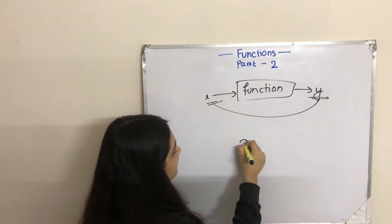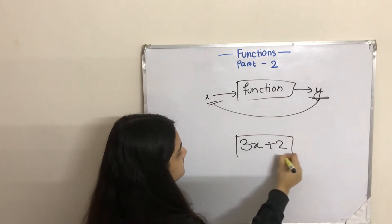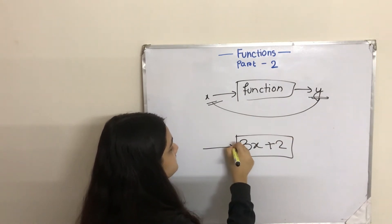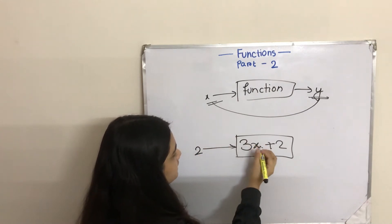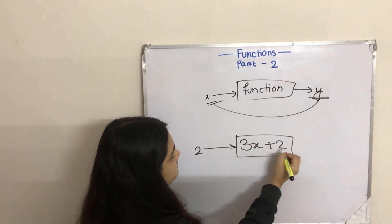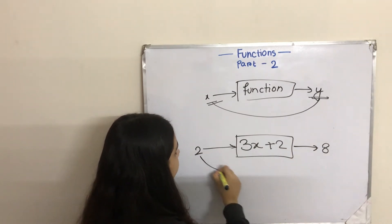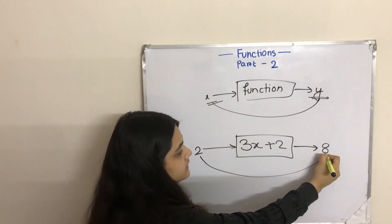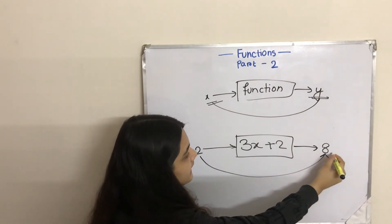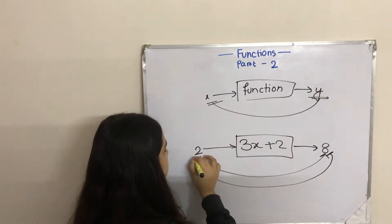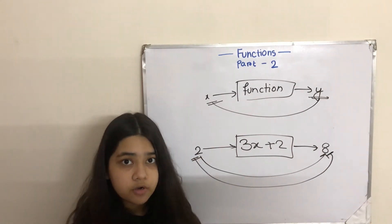Suppose our function is 3x plus 2. In simple functions, if we input 2, it will give us 3 times 2 plus 2, which is 8. So if it was a simple function, 2 would have given us 8. But in inverse functions, 8 would give us 2. When we look at examples, it will be more clear.